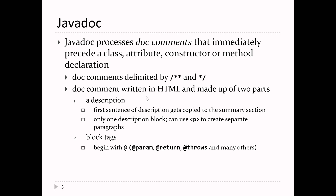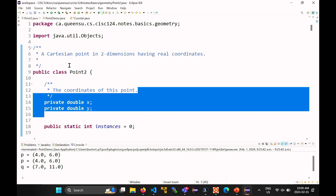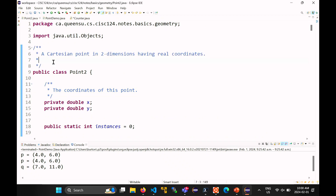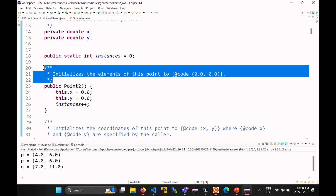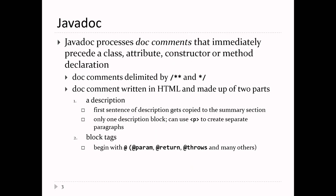The stuff inside the comment is just text. You're allowed to use a subset of HTML if you know it. When you write javadoc comments you're basically describing something. The first part is a description of the thing you're documenting. The first sentence of that description gets copied into the summary section of your documentation — constructor summary, field summary, method summary. The rest of the comment ends up in the detailed section.